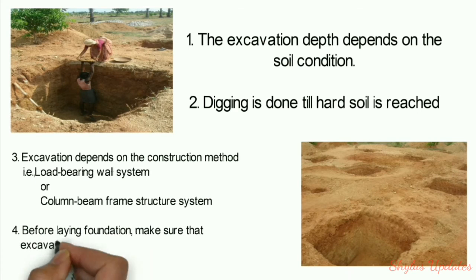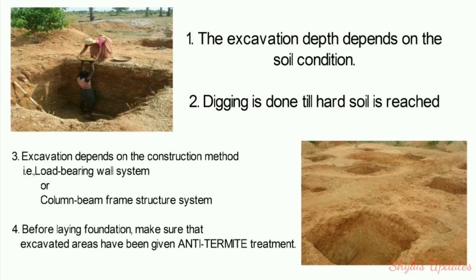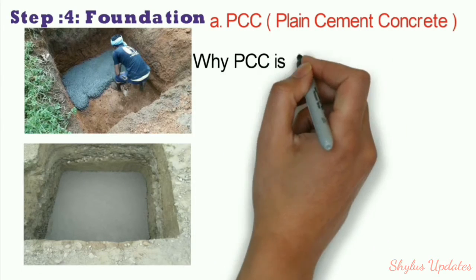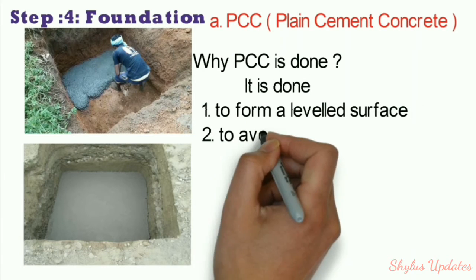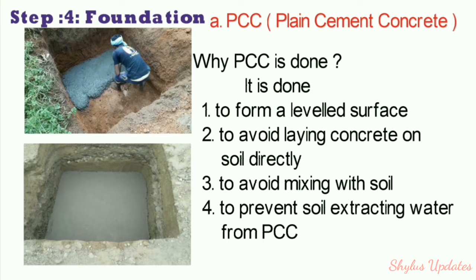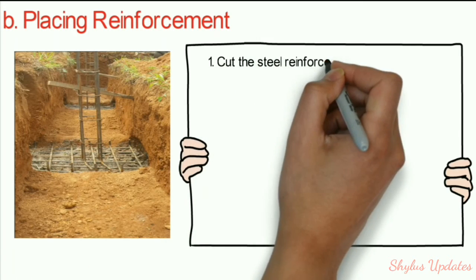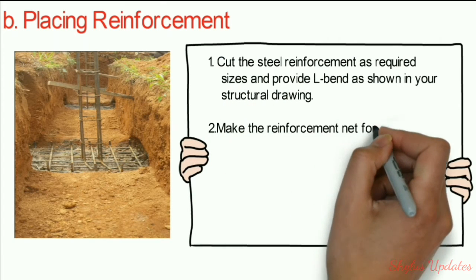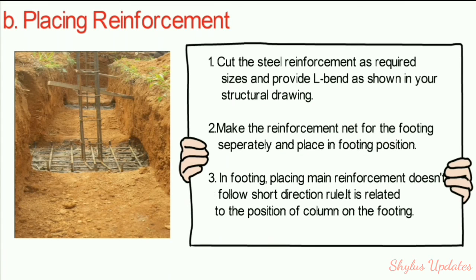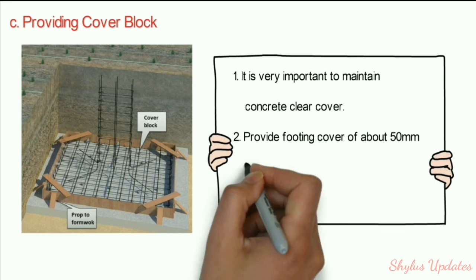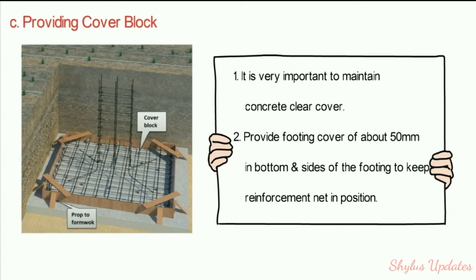Before laying the foundation, ensure the excavated areas have been given anti-termite treatment. Step 4: Foundation. PCC is done to form a level surface, to avoid laying concrete directly on soil, to avoid mixing with soil, and to prevent soil from extracting water from PCC. Cut steel reinforcement to required sizes and provide L-bends as shown in the structural drawing. Make the reinforcement net for the footing and place it in position. Provide a footing cover of about 50 mm at the bottom and sides to keep the reinforcement net in position.